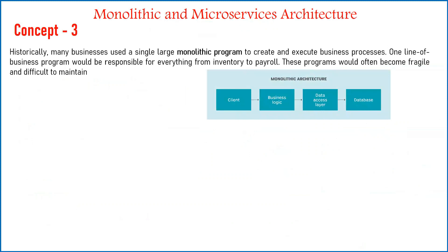The third concept is monolithic and microservices architecture. Going back some years, the way we developed applications was that for the entire business need we developed a single system — automating the whole organization in one application. The problem with that was that in case of any maintenance, outage, upgrade, or change, you had to bring down the complete system, even if only one department had an issue and the others could continue working independently.